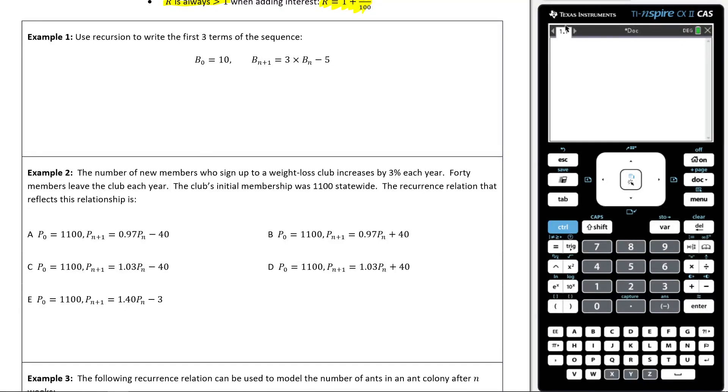All right, we're now going to work through example one here, which says use recursion to write the first three terms of the sequence. So we've got our initial amount, and then you can see we're multiplying it by three and then subtracting five.